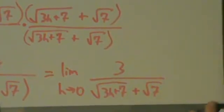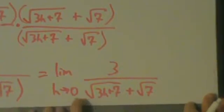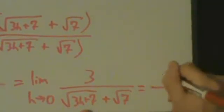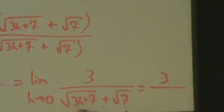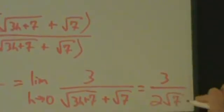Okay, so now we can just do direct substitution. So what's going to happen, if we do direct substitution here, we have 3 times 0, which is just 0, plus 7. So what we really have is 3 over root 7 plus root 7, so that's 2 root 7.